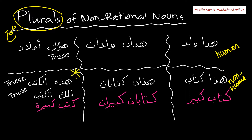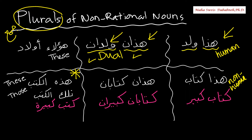Hada walad — this boy — so this is the singular. As a muthanna, a dual noun, we change hada to hadan and walad to waladan. Dual nouns, remember, you suffix alif-nun or ya-nun. Everything depends on everything; you cannot skip videos. We did dual nouns before, about nine or ten videos. So hadan waladan — both agree. Hada walad: singular, singular, masculine, masculine — they agree.